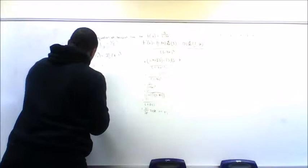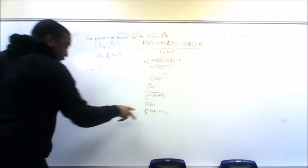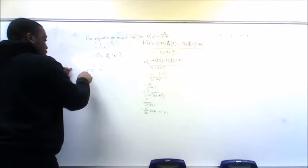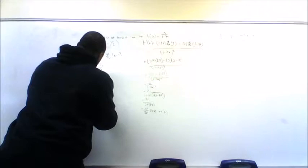So my final answer is y equals 21 over 36 x minus 13 over 12. But you can reduce 21 over 36 — 3 goes into 21 seven times and into 36 twelve times — so the final reduced answer is y equals 7 over 12 x minus 13 over 12.